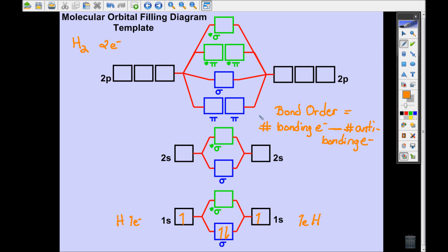Once you subtract that, you're going to divide that number by two. So here I have two bonding electrons and I have zero antibonding electrons. When I divide two minus zero and divide by two, I get one.